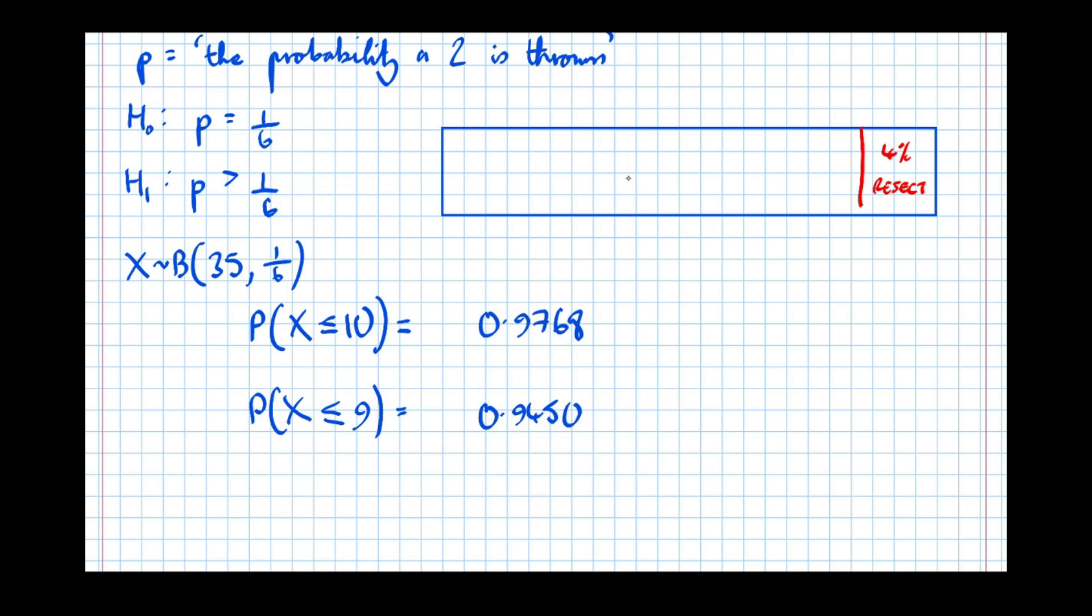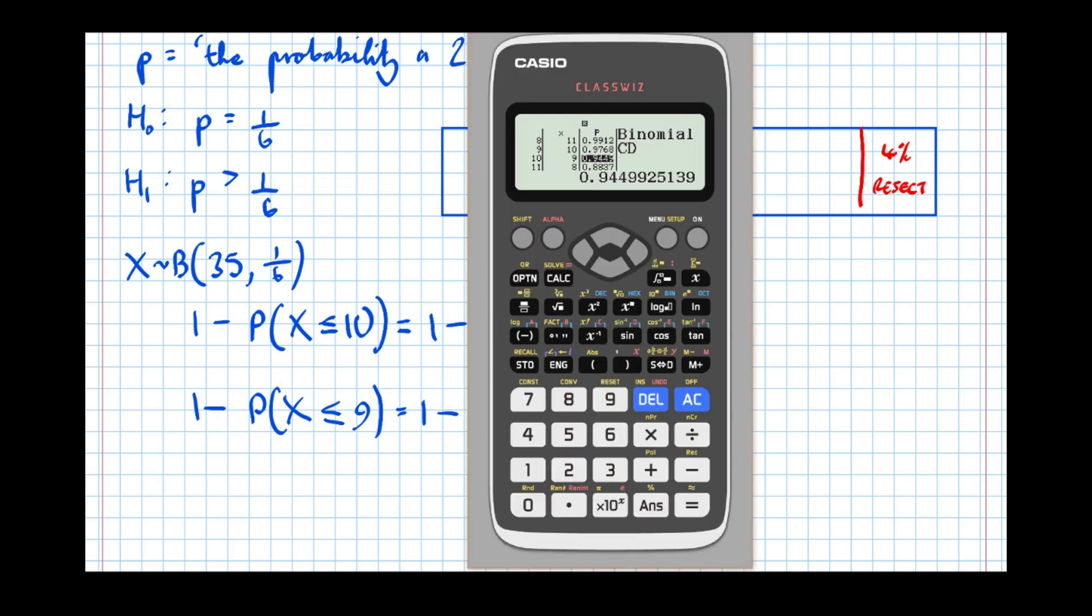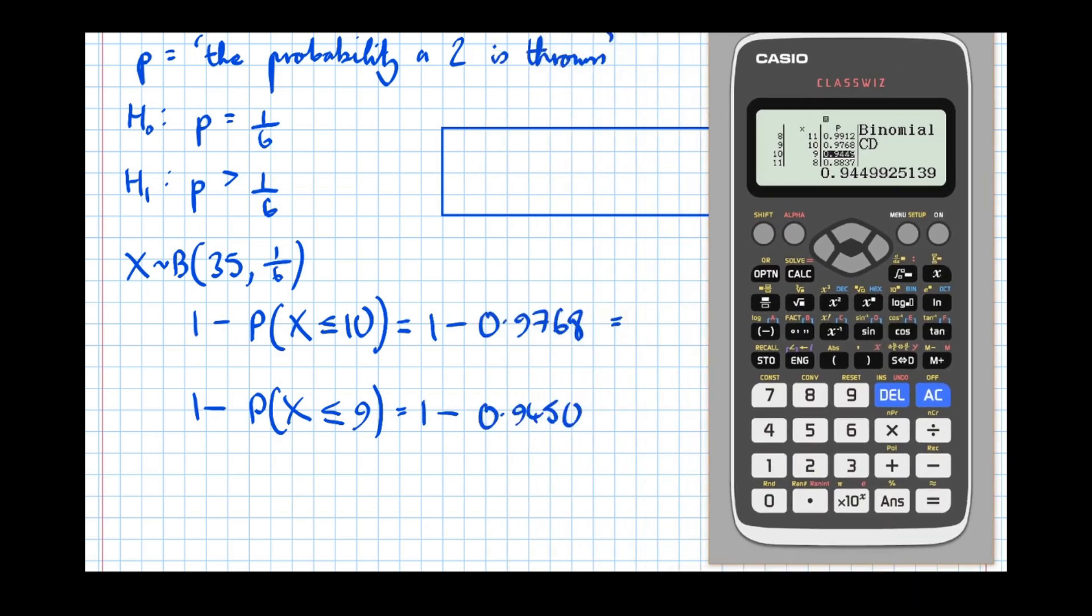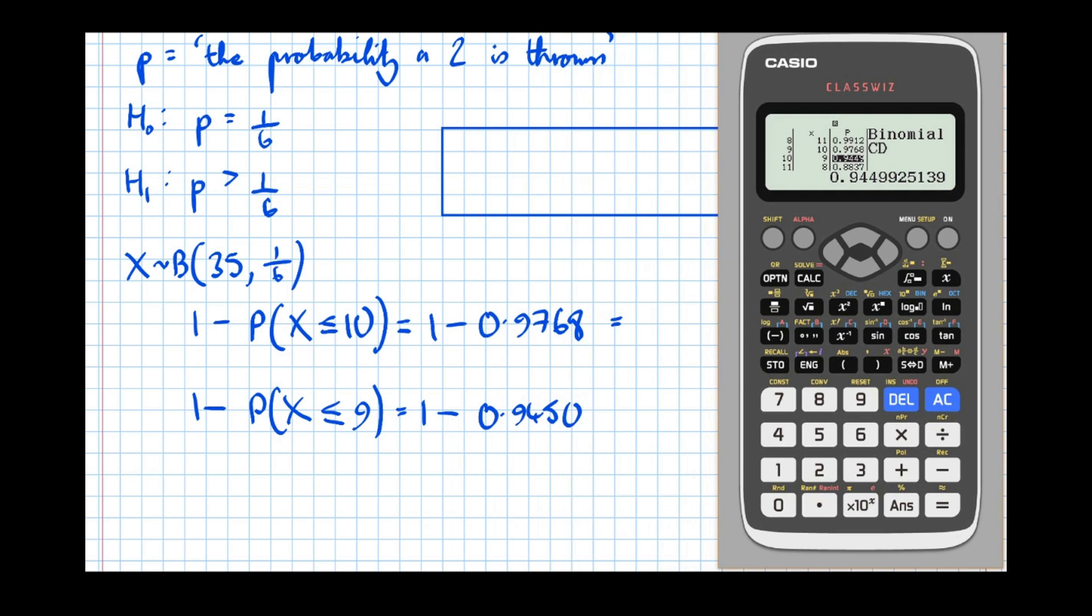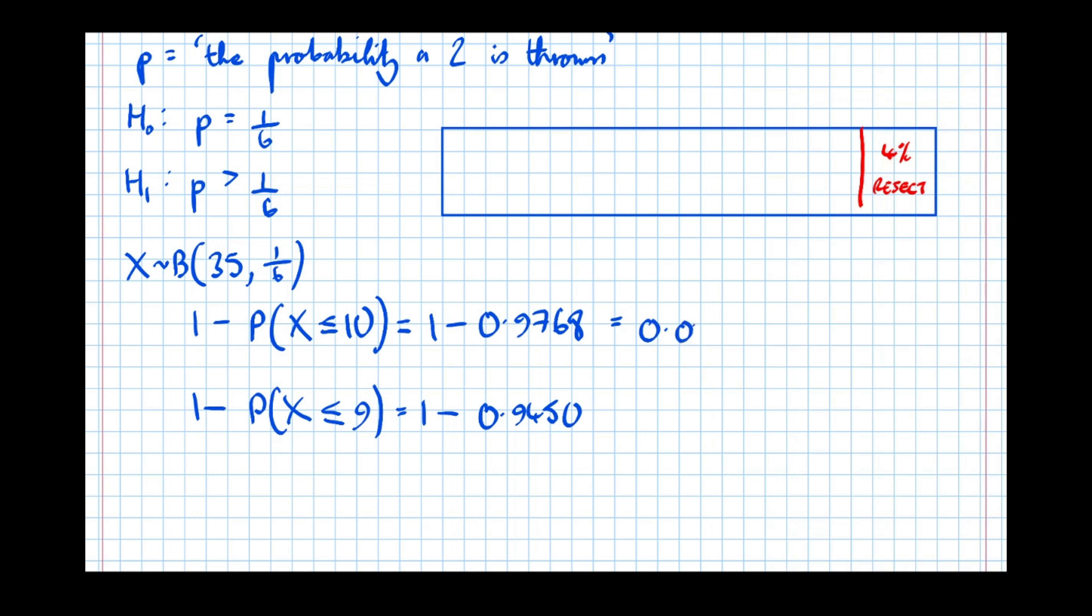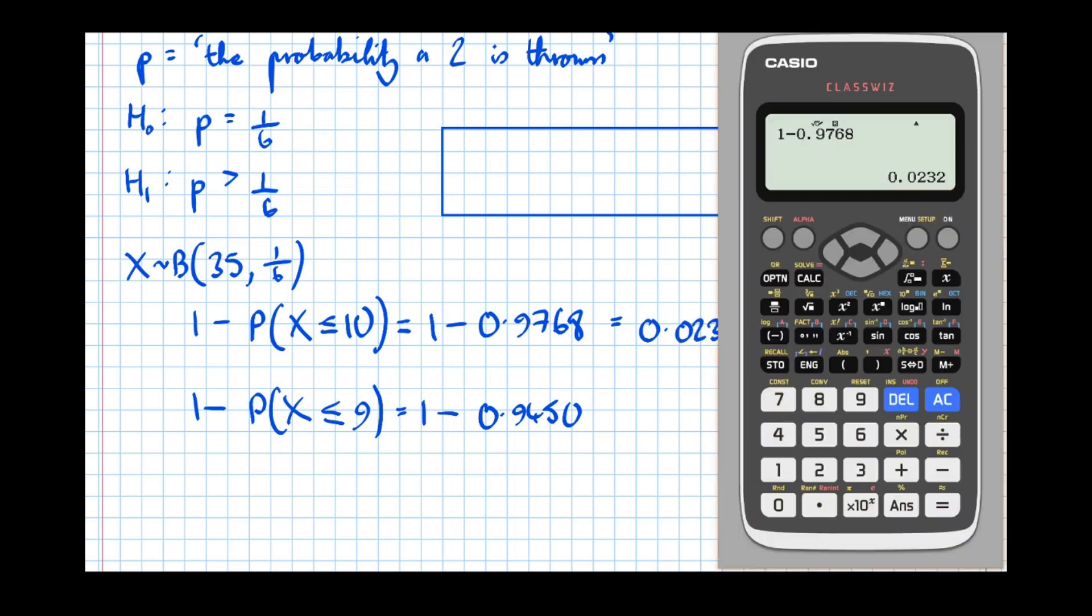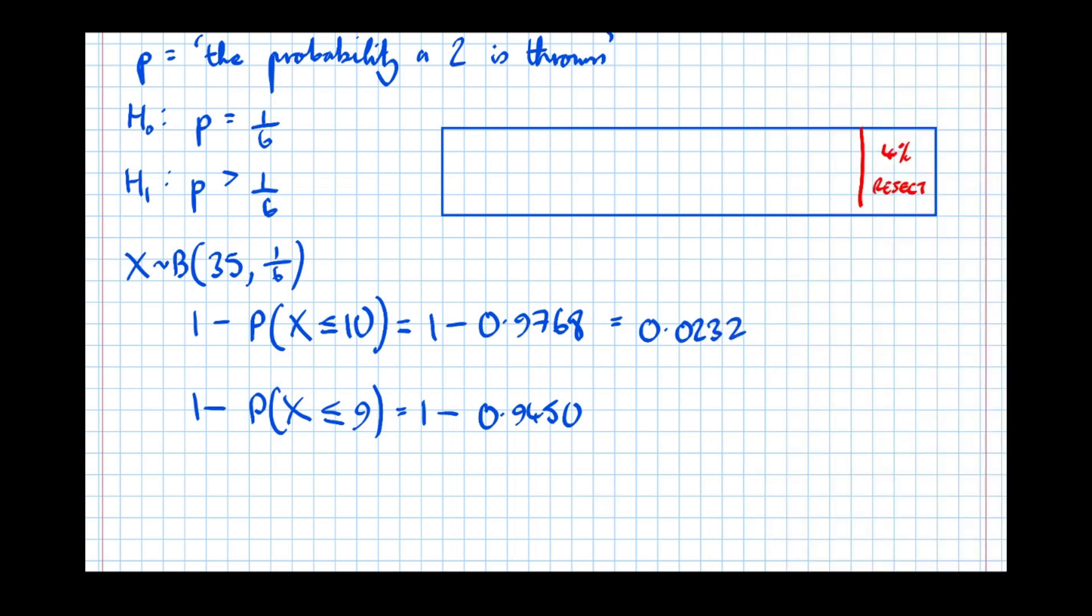But it's actually the probability to the right that we want. So I do 1 minus each of these. I get, so move this across here. 1 minus 0.9768 is 0.0232.